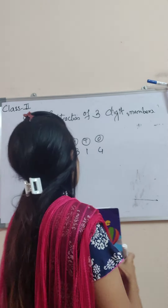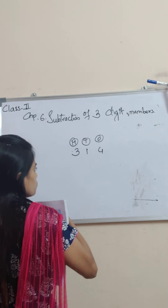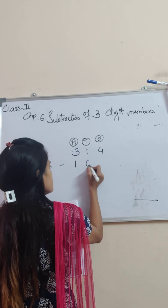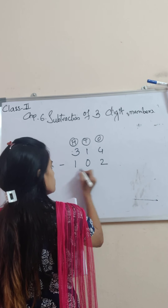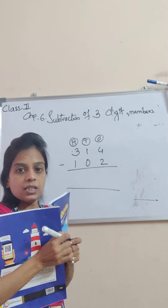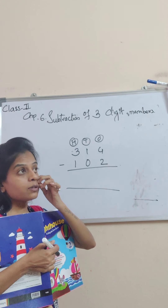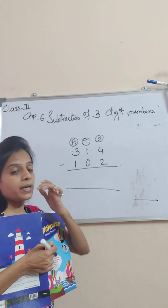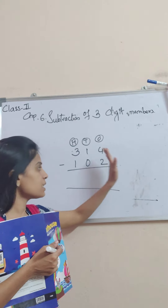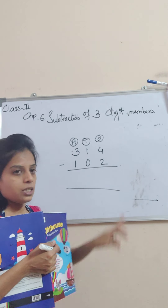Now, if I have a number 314 minus 102. This is three-digit subtraction. As you always start subtraction and addition from one's place, same here — first one's, then tens, then hundreds.